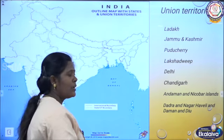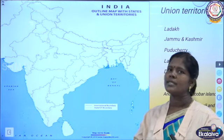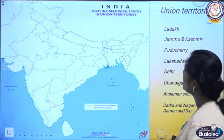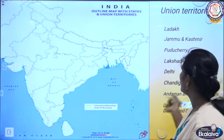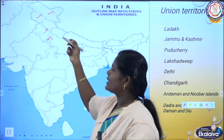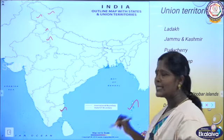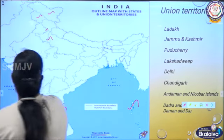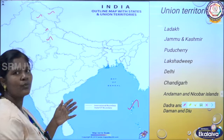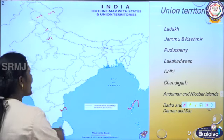For union territories, India has two sets of government: the central government, which works for the whole country, and the state government, which looks after the states. However, union territories are governed by the central government. The 8 union territories of India are: Ladakh, Jammu and Kashmir, Chandigarh, Delhi, Puducherry, Andaman and Nicobar Islands, Lakshadweep Islands, and Dadra and Nagar Haveli and Daman and Diu (merged as per the 2020 act).